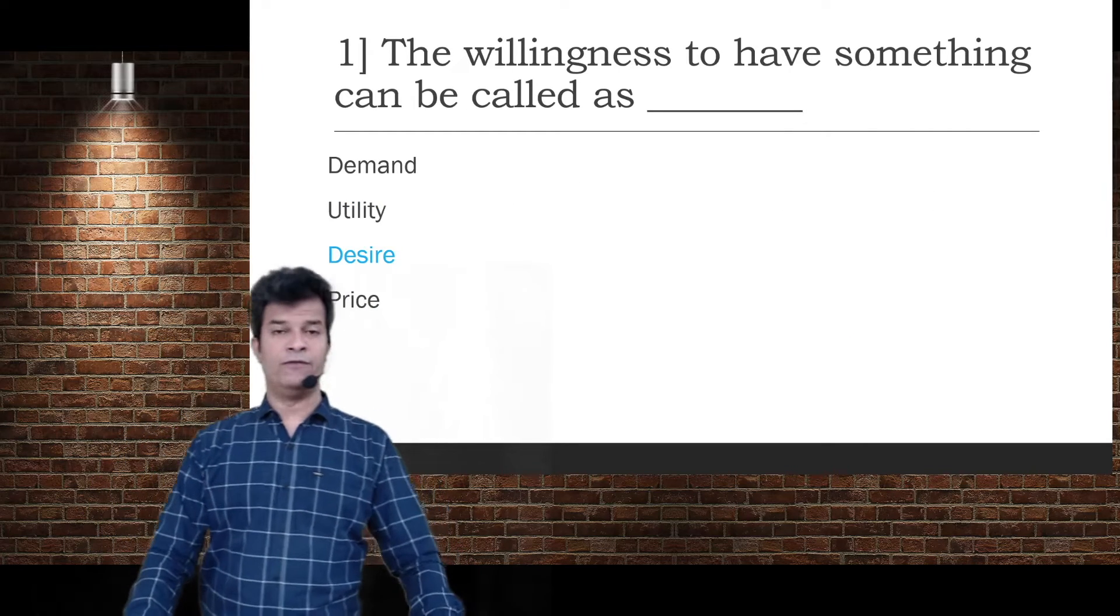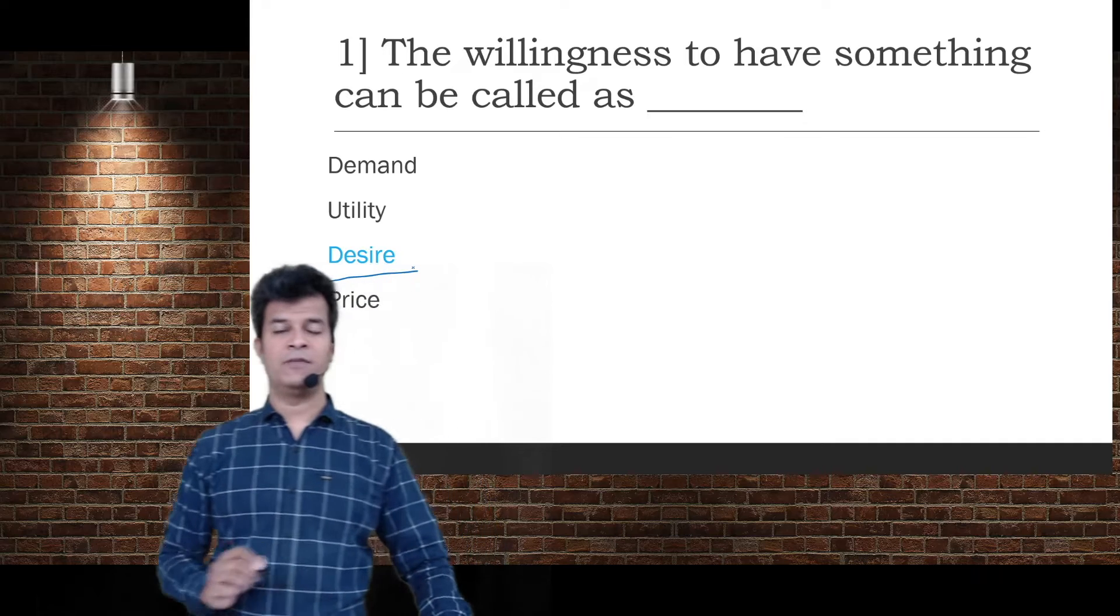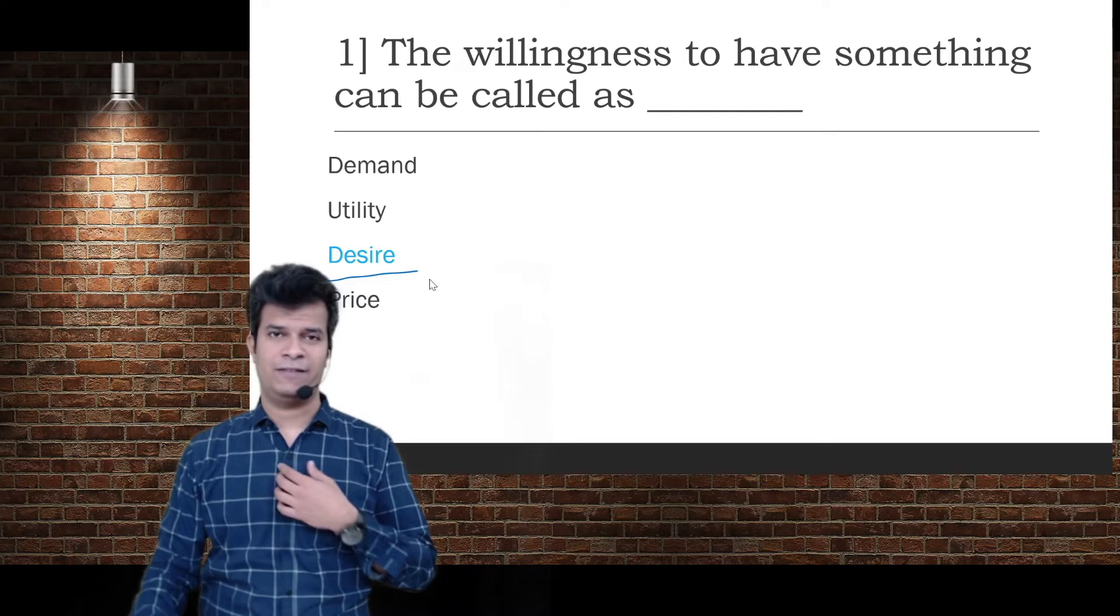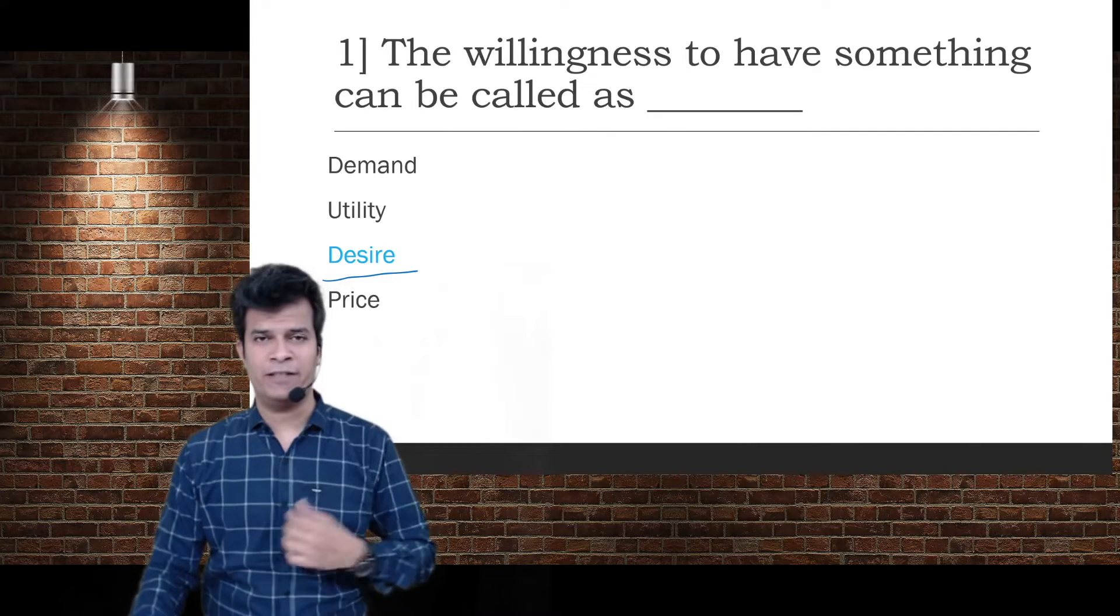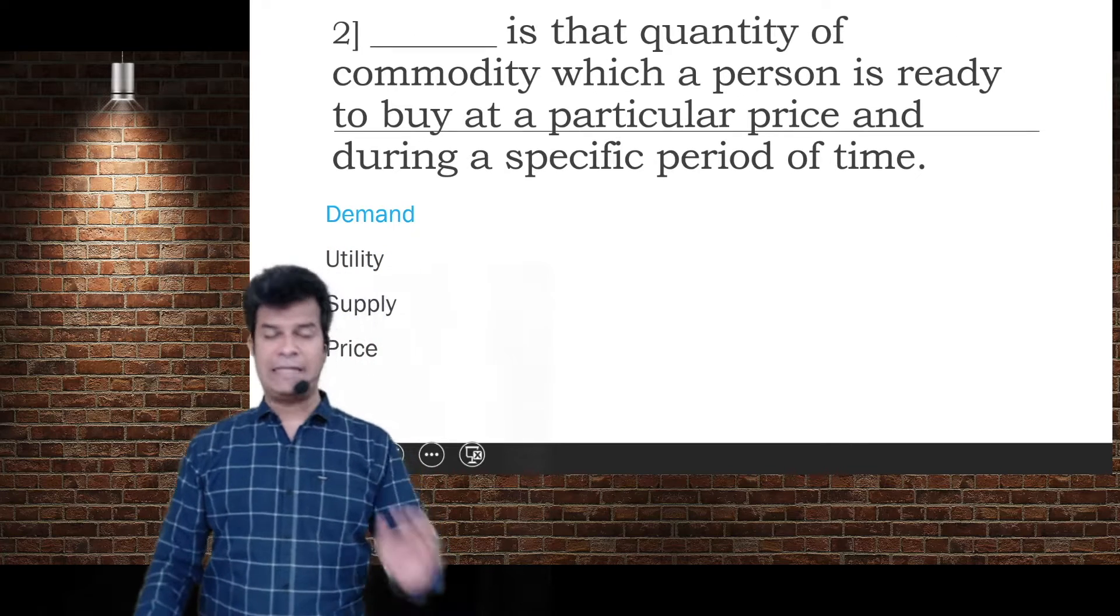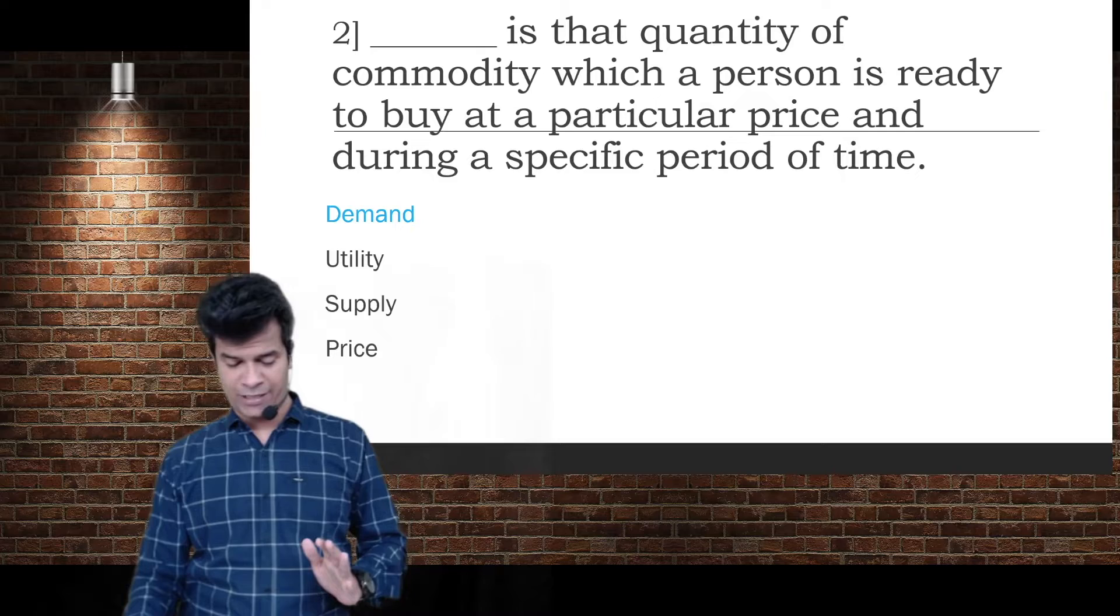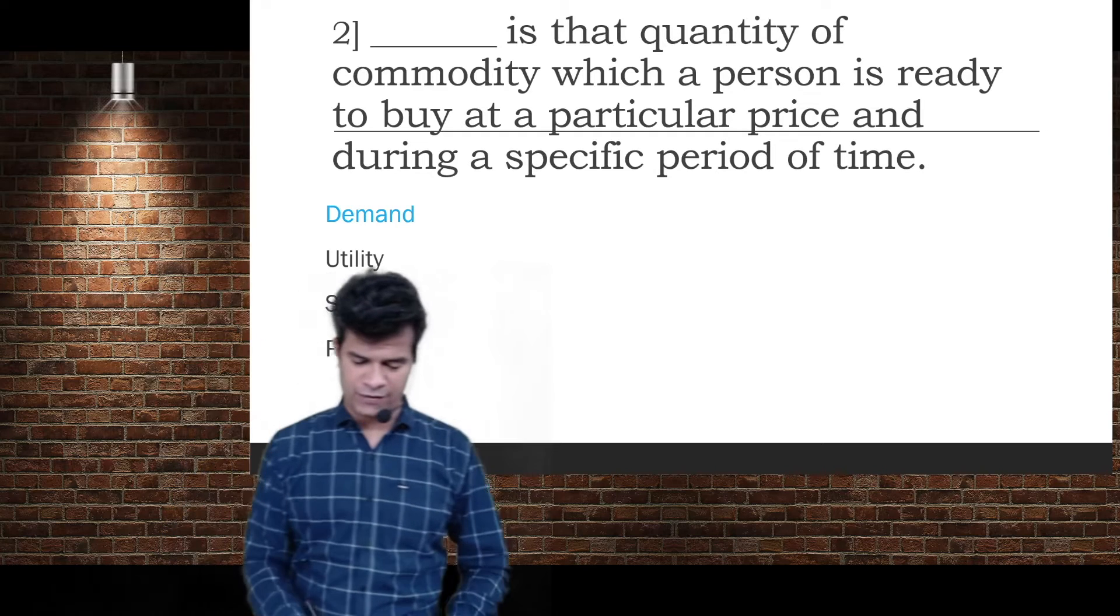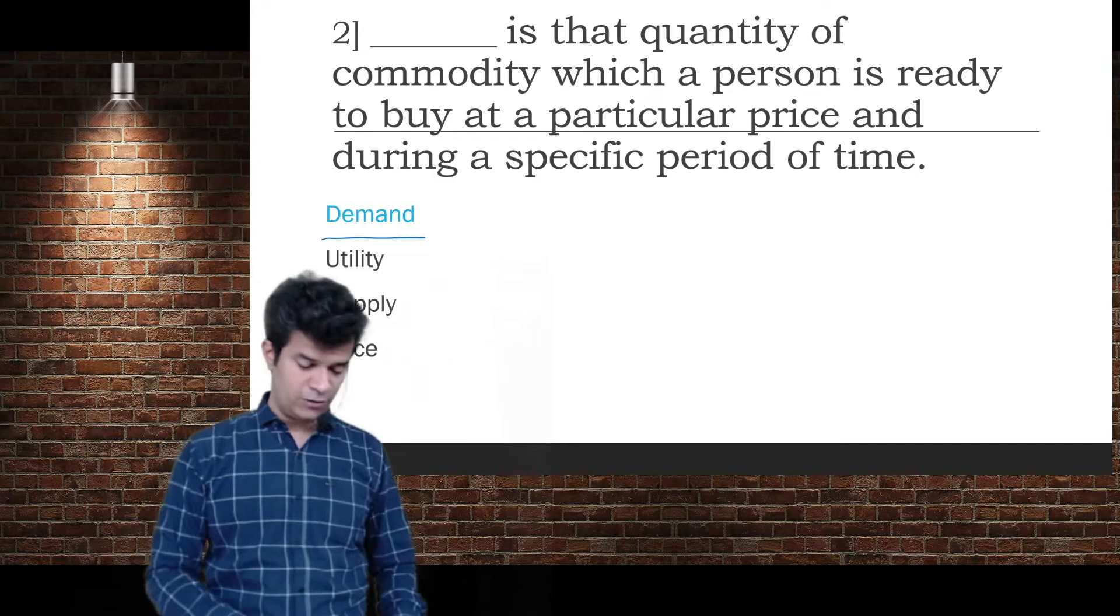Let's start with the first MCQ. The willingness to have something can be called as - you can call it as desire, not demand. Next, the quantity of a commodity which a person is ready to buy at a given price and during a specific period of time - this is demand's core statement. Utility is the base of demand.